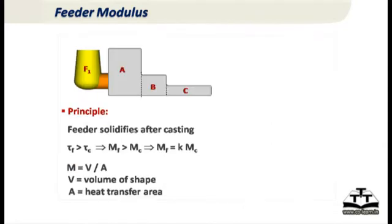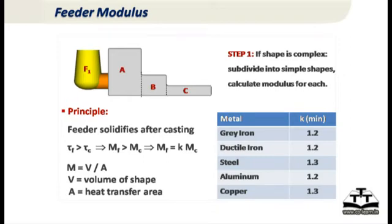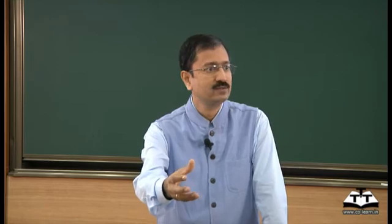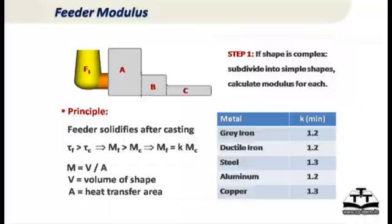Now, how do we actually calculate the feeder size in a scientific way? If you have a real-life casting, you break it up into sections and calculate the volume and surface area for each section. The section with the hottest area — say section A — determines the feeder modulus requirement: feeder modulus should be more than casting modulus. Do not take the entire casting volume or surface area; it gives a wrong picture, because casting solidification time equals the solidification time of the hot spot. So look only at the area around the hot spot.